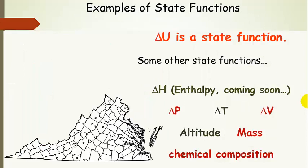Some other examples of state functions: the change in internal energy, delta U — or delta E in some books — is a state function. Enthalpy, delta H, is a big one we'll talk about in this unit, and it is also a state function that only depends on the initial and final states. Other state functions include the change in pressure, change in temperature, change in volume, altitude, mass, and chemical composition.